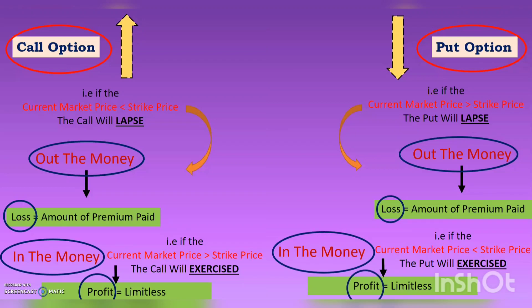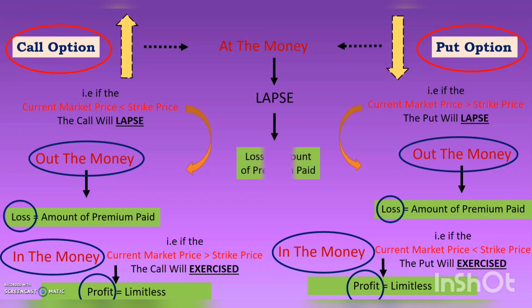Someone might ask about 'at the money' — what happens for both call and put options? For 'at the money,' in both cases the current market price equals the strike price, and the option will lapse. Since it lapses, you will make a loss equal to the amount of premium paid.